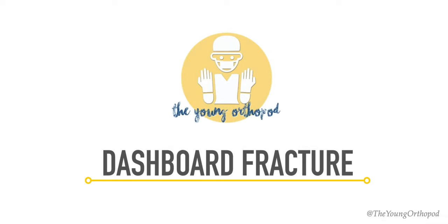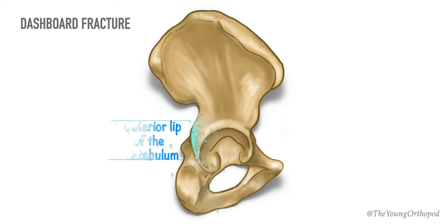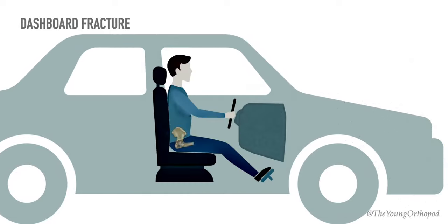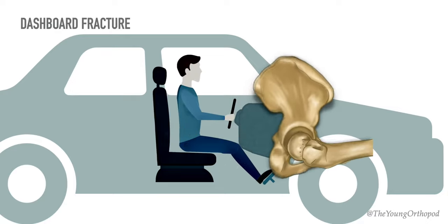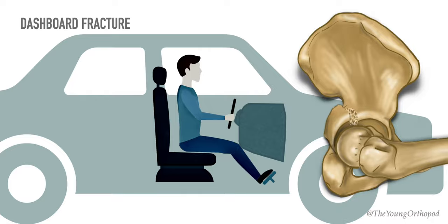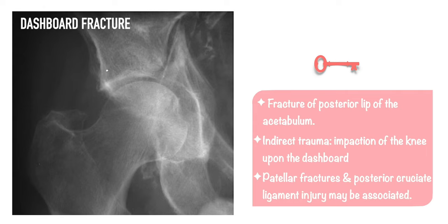Dashboard fracture is a fracture of the posterior lip of the acetabulum, often associated with posterior dislocation of the hip. The name refers to a fracture which typically occurs in an automobile accident with impaction of the knee upon the dashboard. This indirect trauma results in fracture of the posterior rim of the acetabulum by the femoral head. This type of fracture is associated with patellar fractures and posterior cruciate ligament rupture.